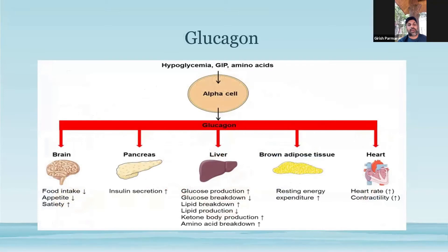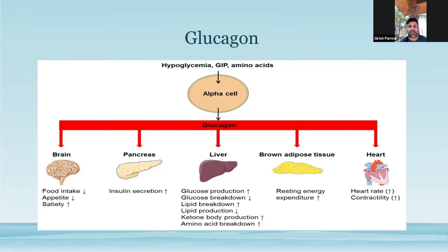Let's look at the third molecule, namely glucagon, which is involved in this family of incretins. Glucagon is a major counter-regulatory hormone which increases during hypoglycemia. Glucagon receptor stimulation at the level of the pancreas on the beta cells causes enhanced insulin secretion. At the level of the brain, glucagon reduces food intake and improves satiety, culminating in good amount of weight loss. Stimulation of glucagon receptors at the level of the adipose tissue causes more browning of adipose tissue and increases resting energy expenditure, leading to good amount of weight loss.